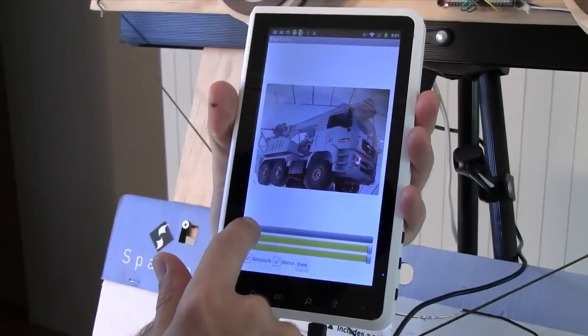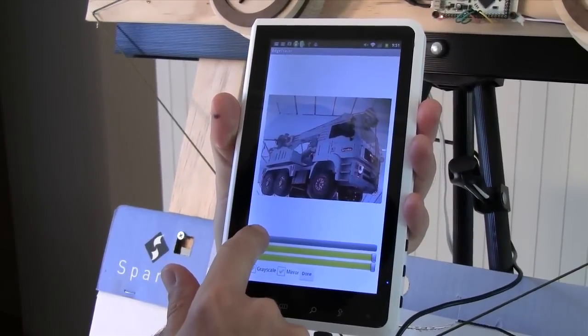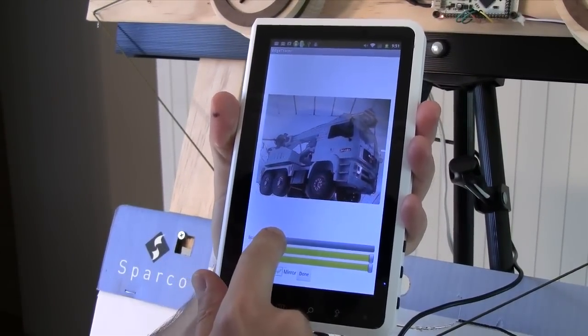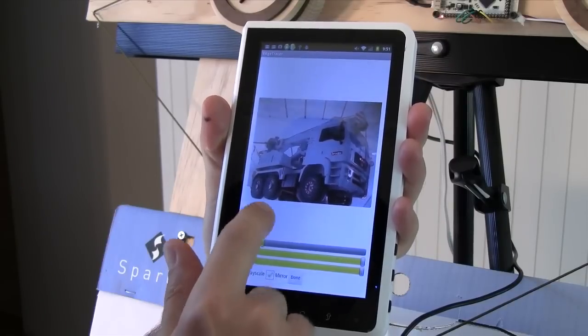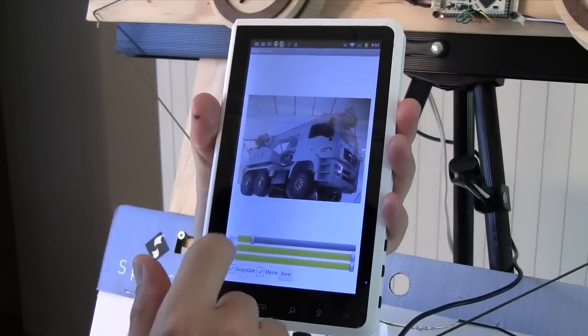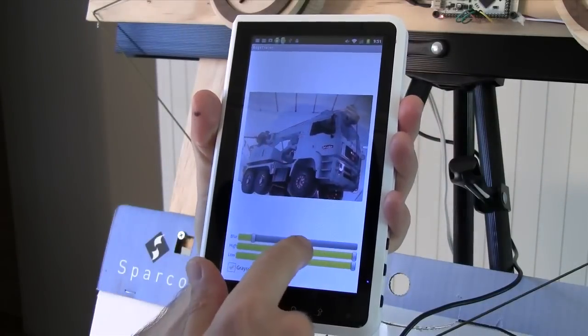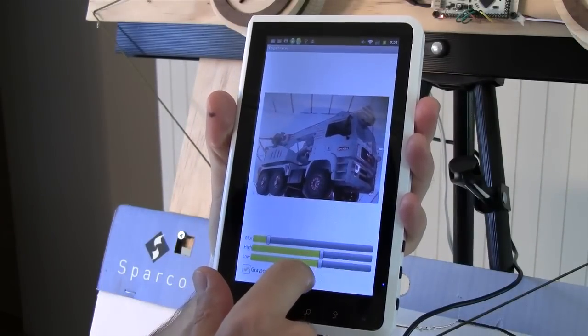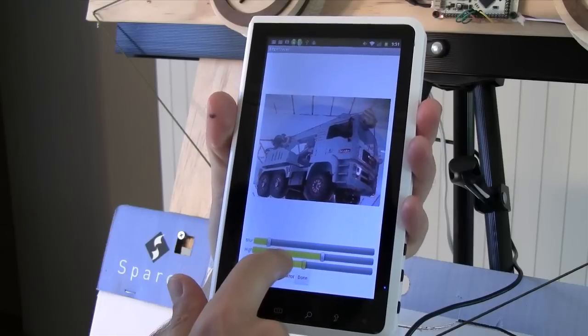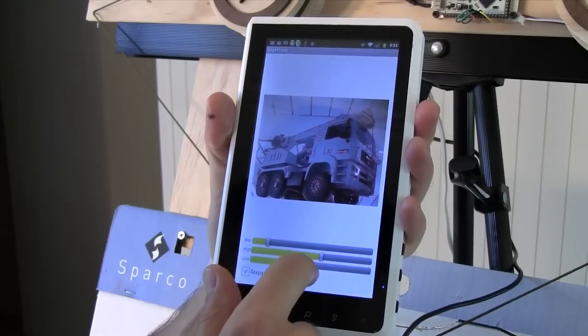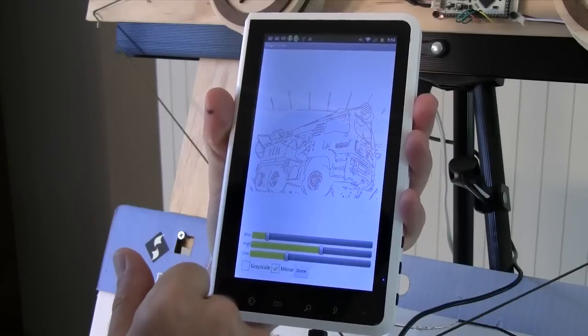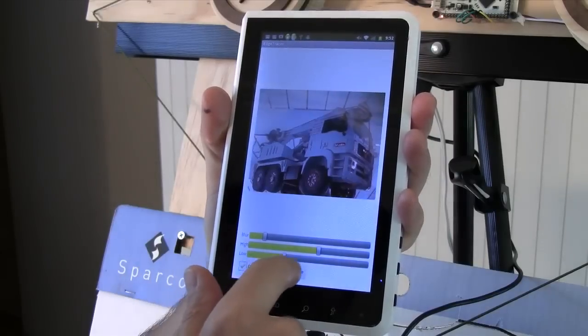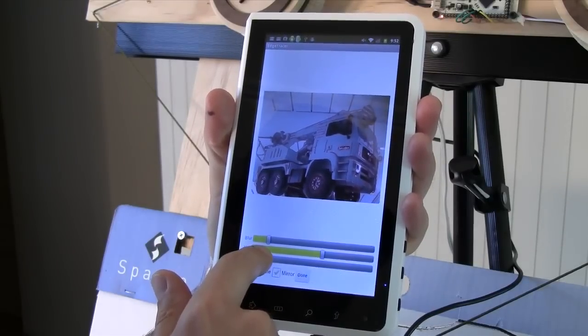There are a couple of parameters of the edge detection algorithm I can play with. This slider controls blurring, so let me blur the picture a little bit so the little imperfections just disappear. And these are the thresholds of what's being considered an edge. If I click this button here, it can make the picture on the back disappear so I can see what my edges are going to look like.